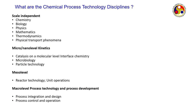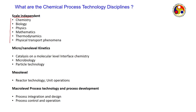What are the chemical process technology principles? These are scale-independent. The different areas — chemistry, biology, physics, mathematics, thermodynamics, physical transport phenomena — do not depend upon scale. For example, in extraction, you know which solvent to use to extract a solute, but chemistry alone won't tell you how long extraction takes, how big the column should be, how many stages it should have, or the geometry of the column. This is the basic of any process engineering — we call it the micro level.